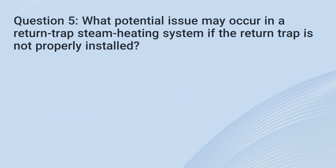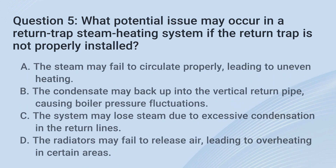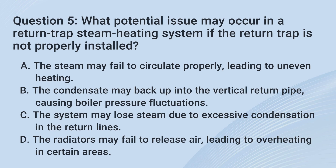Question 5. What potential issue may occur in a return trap steam heating system if the return trap is not properly installed? A. The steam may fail to circulate properly, leading to uneven heating. B. The condensate may back up into the vertical return pipe, causing boiler pressure fluctuations. C. The system may lose steam due to excessive condensation in the return lines.